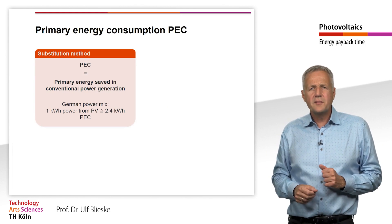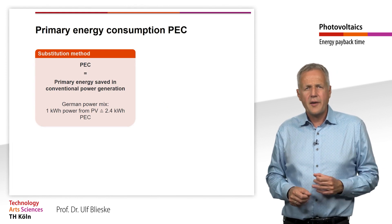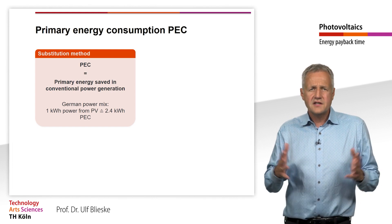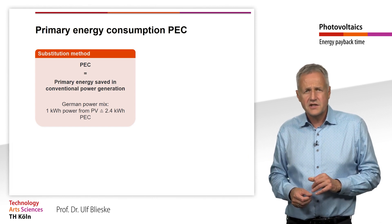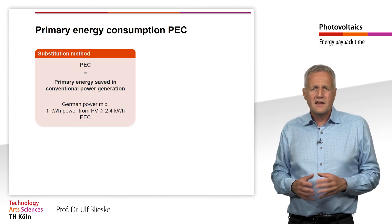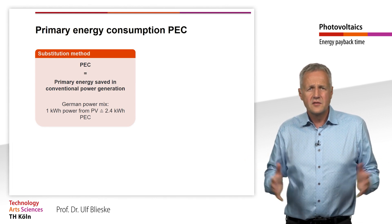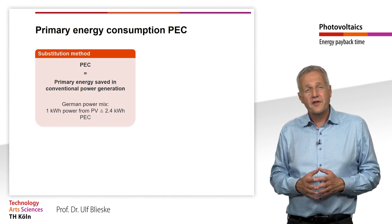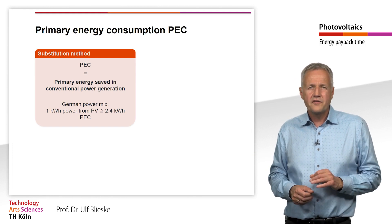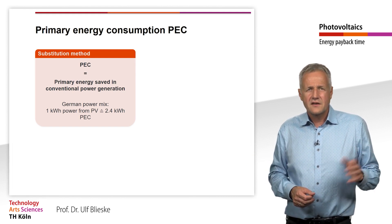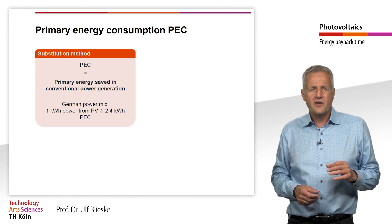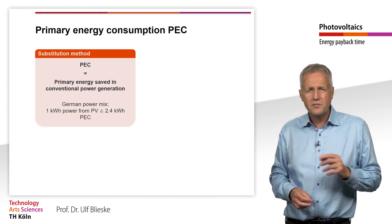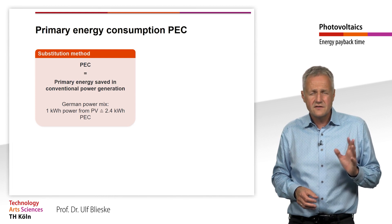But how can we determine the level of primary energy consumption? This depends essentially on the energy source from which the energy originates. In the case of fossil energy sources, this is simple — we simply multiply the calorific value by the amount of fuel used. In the case of power generated from other energy sources, for example photovoltaics, wind power or even nuclear energy, this is not so simple.